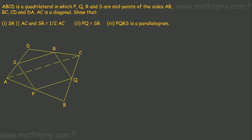This question says ABCD is a quadrilateral in which P, Q, R, S are midpoints of sides AB, BC, CD, and DA. We have this quadrilateral ABCD where P is the midpoint of AB, Q is the midpoint of BC, R is the midpoint of CD, and S is the midpoint of AD. AC is a diagonal.